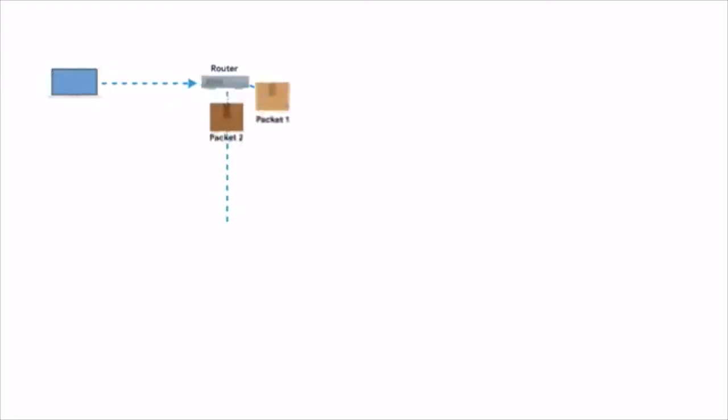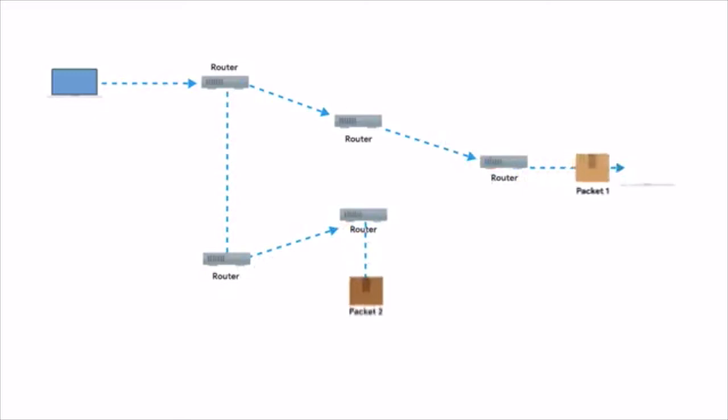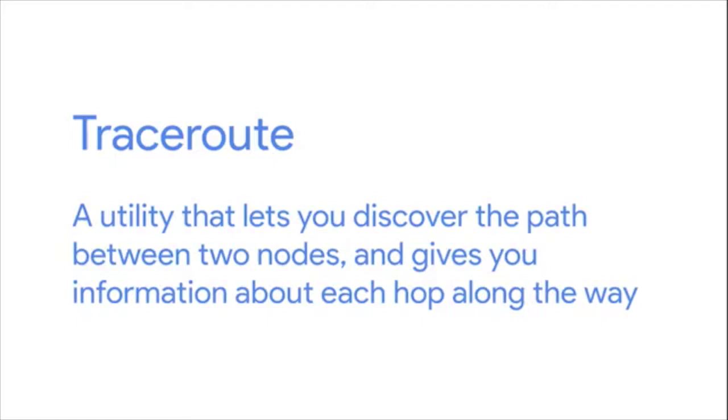With ping, you now have a way to determine if you can reach a certain computer from another one and understand the general quality of the connection. But communications across networks, especially across the internet, usually cross lots of intermediary nodes. Sometimes you need a way to determine where in the long chain of router hops the problems actually are. Traceroute to the rescue. Traceroute is an awesome utility that lets you discover the paths between two nodes and gives you information about each hop along the way.